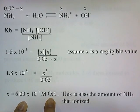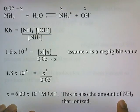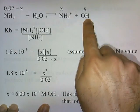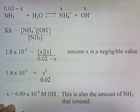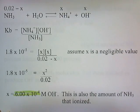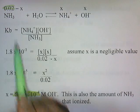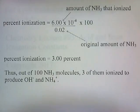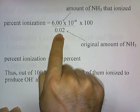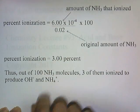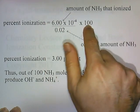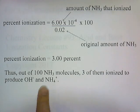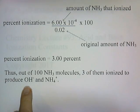That's the first part of the answer — that's how much hydroxide we have, and this is also the amount of ammonia that ionized. So 6 times 10 to the negative fourth molar of NH3 ionized. To find the percent ionization, we use the original amount and the amount that ionized: percent ionization equals the amount that ionized divided by the original amount, times 100. The original amount is 0.02 molar, and the amount that ionized is 6 times 10 to the negative fourth. That gives us 3%. So out of 100 ammonia molecules, three of them ionized to produce hydroxide and ammonium.